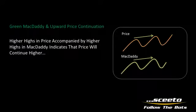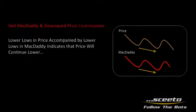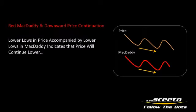When you see a higher high in price accompanied by a higher high in MacDaddy, this indicates that price will continue higher. Conversely, when you see a lower low in price and a lower low in MacDaddy, this indicates that price will continue downward.